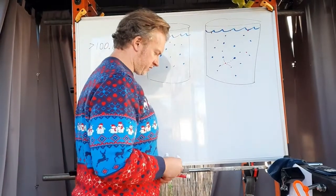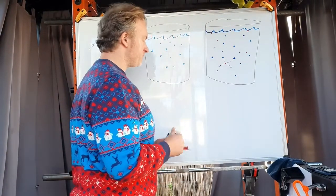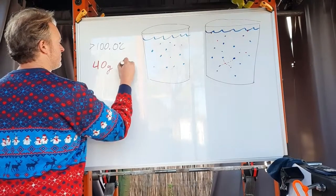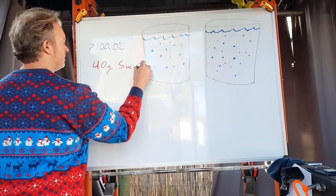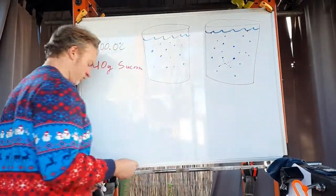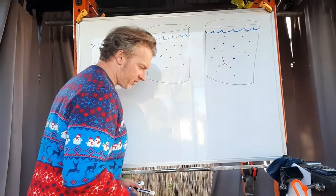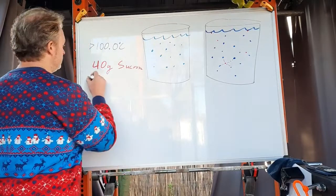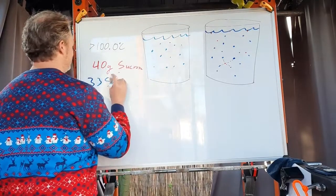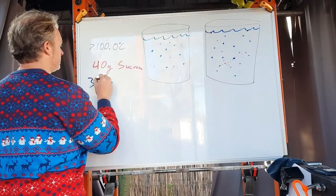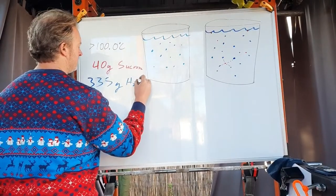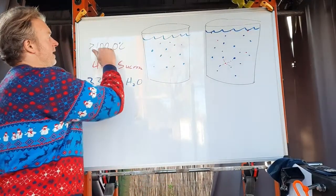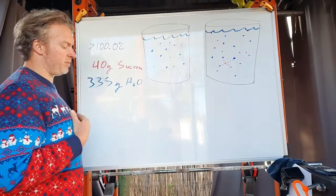We have 40 grams of sucrose. I'm going to put that in red as a reminder that red is what these dots are. And we have 335 grams of water. I'm going to write that in blue because water's blue. We're trying to find what the boiling point is - it's going to be above 100.